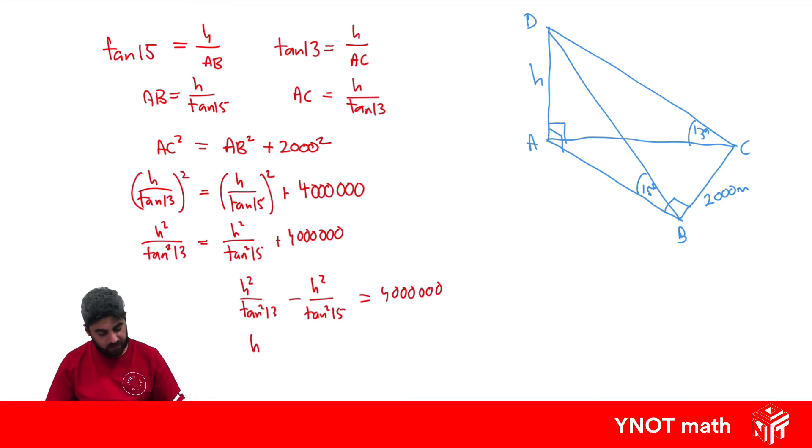We can factorize out the H squared. So we're left with 1 over tan squared 13 minus 1 over tan squared 15 equals 4 million. Divide both sides by the bracket so we get H squared equals 4 million over 1 over tan squared 13 minus 1 over tan squared 15.